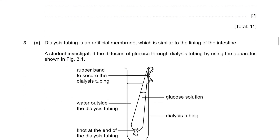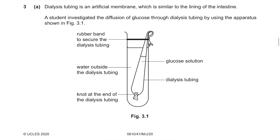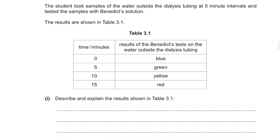Question 3. Dialysis tubing is an artificial membrane which is similar to the lining of an intestine. A student investigated the diffusion of glucose through dialysis tubing using the apparatus shown in figure 3.1. The student took samples of the water outside the dialysis tubing at 5-minute intervals and tested them with Benedict's solution. The results in table 3.1 show the colour changed from blue to red in the end.